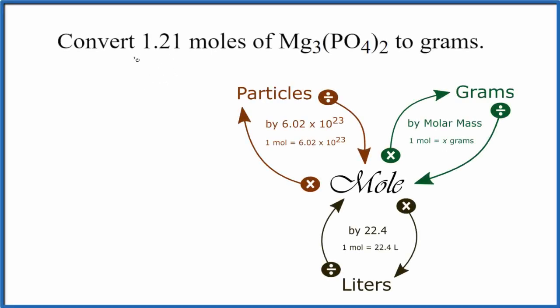In this video, we'll convert 1.21 moles of Mg3(PO4)2 to grams. This is magnesium phosphate.